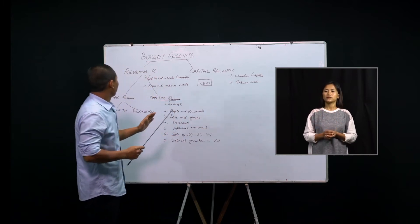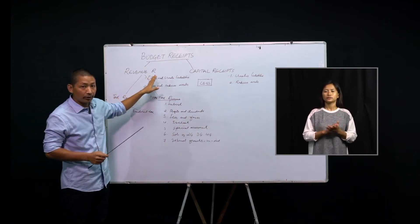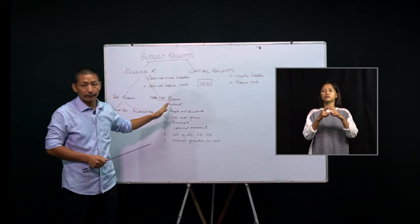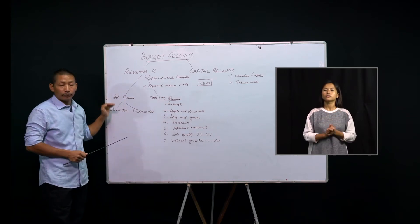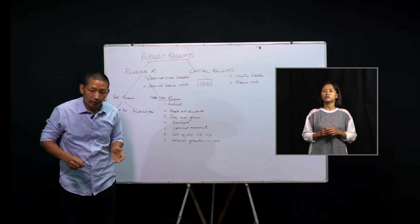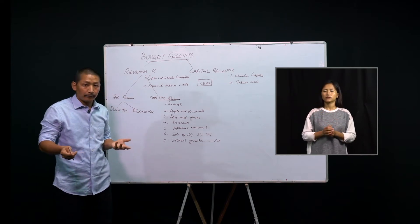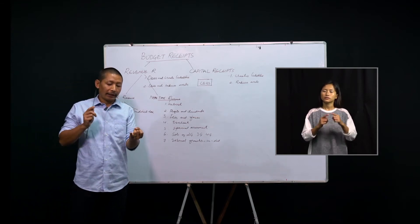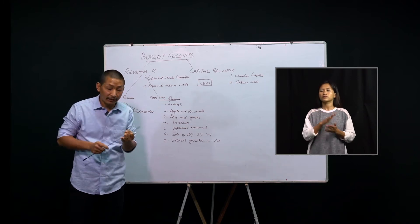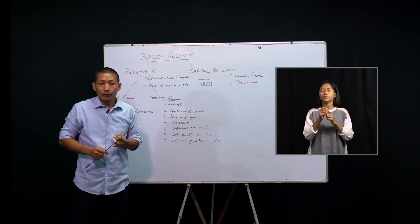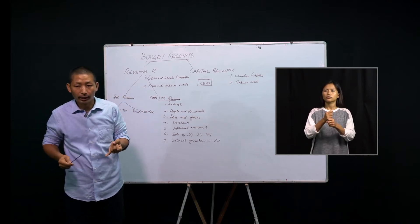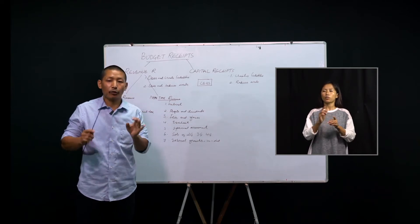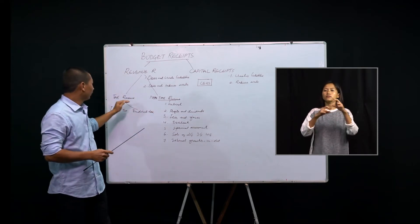Now, I want us to focus on revenue receipts. Revenue receipts is further classified into tax revenue and non-tax revenue. What is tax revenue? It's very simple. When the government generates revenue by taxing the people — by taxing on the income and properties of persons and companies — that is simply called tax revenue.